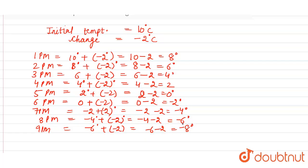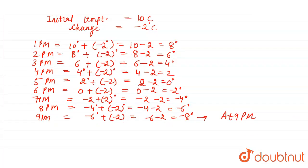So we can say at 9 pm the temperature will be 8 degrees below zero. At 9 pm, the temperature will be 8 degrees below 0.